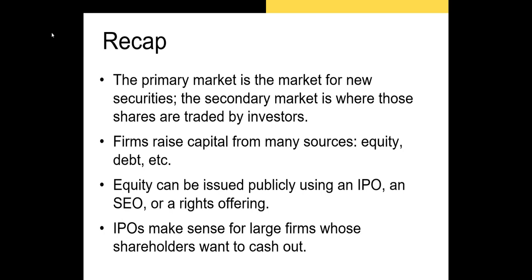So let's recap. The primary market is the market for new securities, whereas the secondary market is where those securities trade across investors. Firms raise capital by issuing many different types of securities — equity, debt, preferred stock, etc. Equity can be issued using an IPO, a secondary equity offering, or a rights offering. Finally, IPOs make sense for large firms because the shareholders of those private firms want to cash out, and one of the best ways to do so is to take the firm public and allow it to sell shares to new investors. If you have any questions, please feel free to email me and I'll see you in the next video.